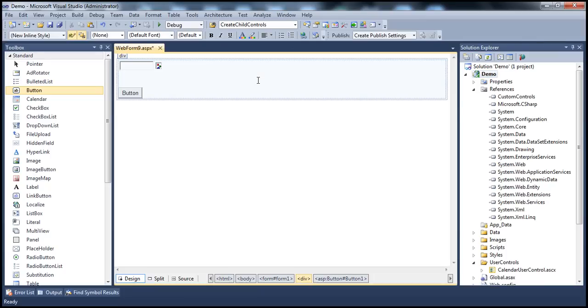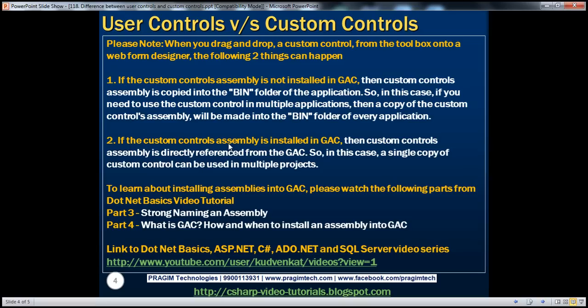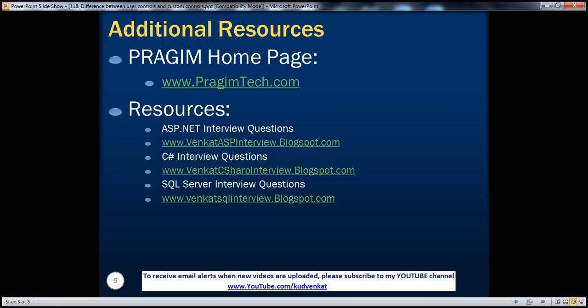I can run this application and it works. So keep that in mind: if the custom controls assembly is installed in GAC, then the custom controls assembly is directly referenced from the GAC, and a single copy of the custom control can be used in multiple projects. On this slide, you can find resources for ASP.NET, C#, and SQL Server interview questions. That's it for today. Thank you for listening. Have a great day.